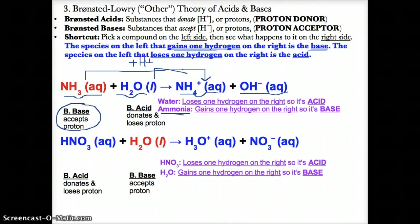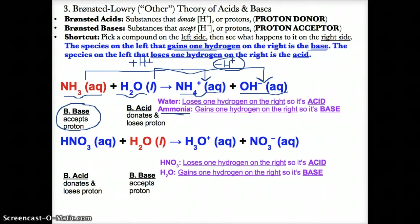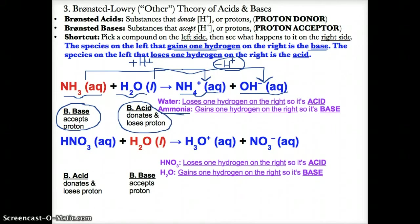On the other hand, H2O on the left becomes OH- on the right. What's happening is you're losing a proton or hydrogen ion because you're going from H2O to a species with one lower charge of minus one — going from H2O to OH-. So H2O is the Bronsted acid because it's the species on the left that loses one hydrogen on the right.